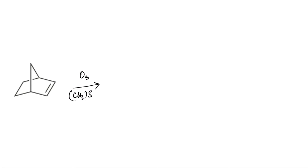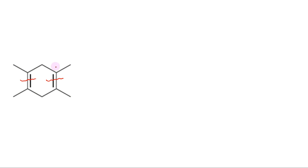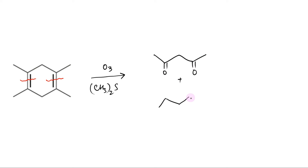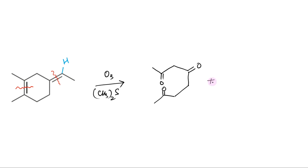In another case, both double-bonded carbons have one hydrogen attached; therefore, ozonolysis followed by reduction will convert both into aldehyde groups. In this cyclic six-membered ring example with two double bonds, both can be cleaved to add oxygen on the double-bonded carbons. Since both double bonds have only alkyl groups and no hydrogens, the products formed will be ketones only. In the final example, two double bonds are present, one in the ring and one outside. Only one double-bonded carbon has hydrogen attached, while others have alkyl groups only; therefore, three carbons will be oxidized to ketones and one will be oxidized to an aldehyde.